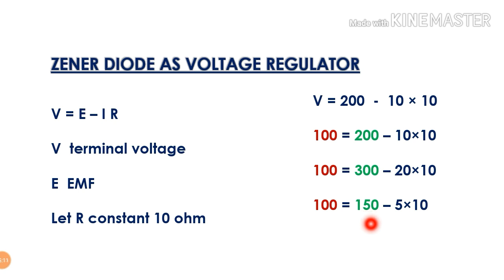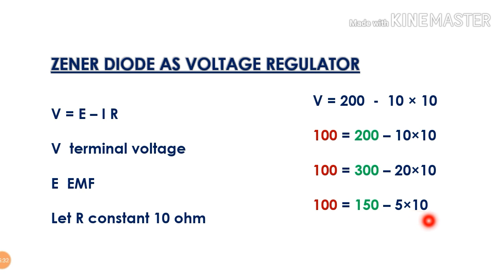If the current is 150, we will put 5. That is 5, which means the terminal voltage is 100. We will put the terminal voltage constant — 100, 100, 100. This is constant in the terminal voltage. This is regular voltage.